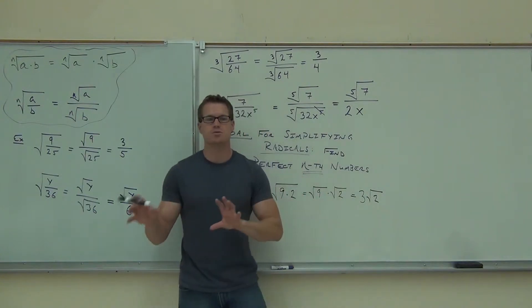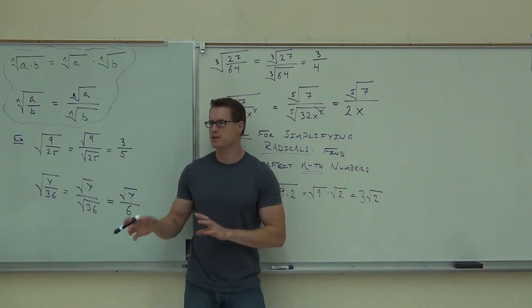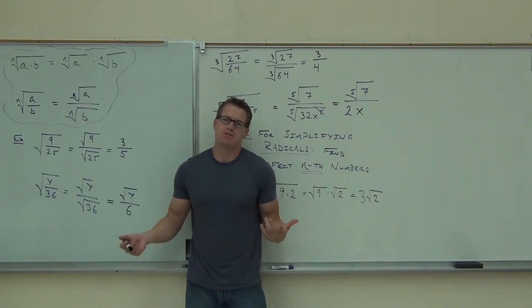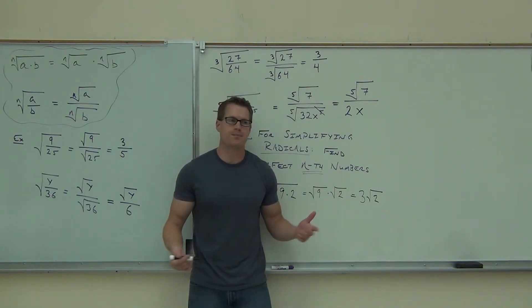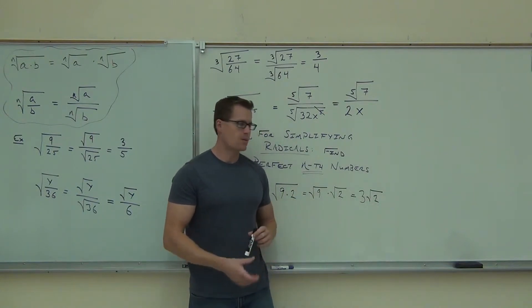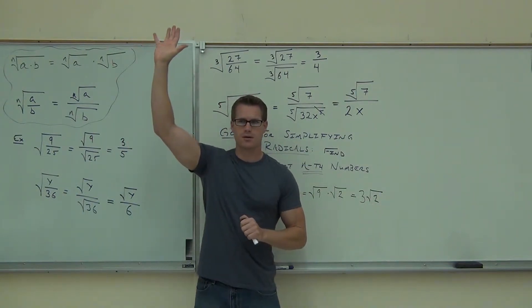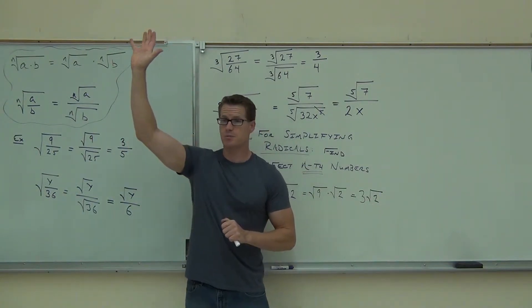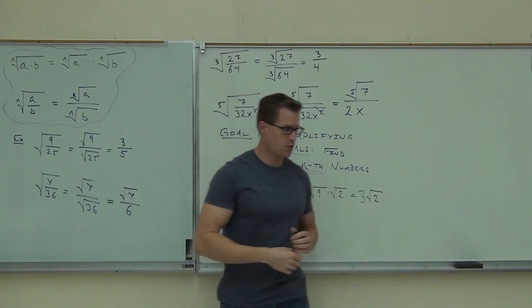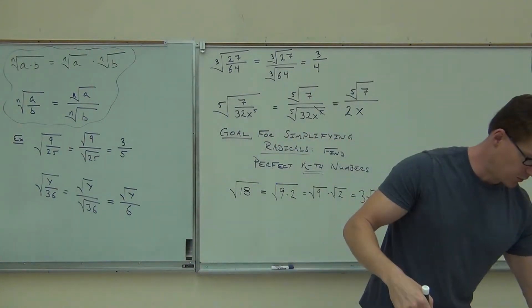Plus, in order to add and subtract radicals — which we're going to do in the next section — you have to have them in simplest form. That is in simplest form. Okay, we're going to try some more examples before we add some variables in there.